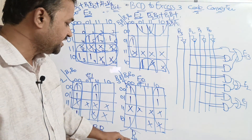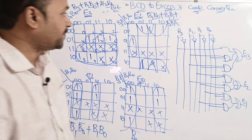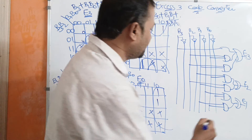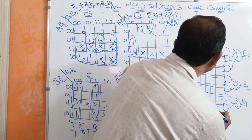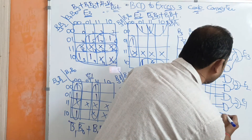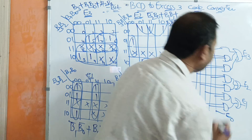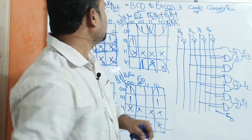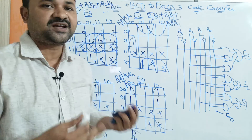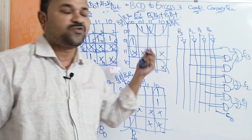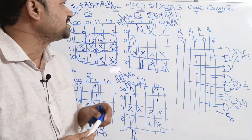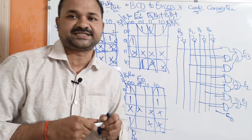For E0, the expression is simply B0 bar. This line representing B0 bar is the output E0. In this way we can convert a 4-bit BCD number to XS3 code.